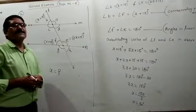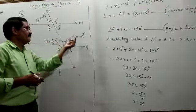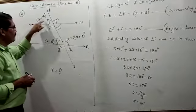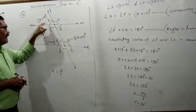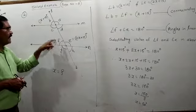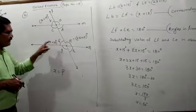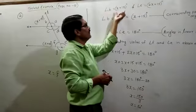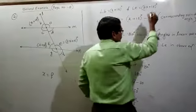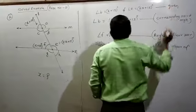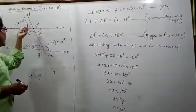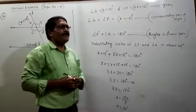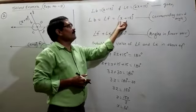You have to equate x plus 15 plus 2x plus 15 with 180 degrees, and find the value of x. First, find angle F from angle B. Since B and F are corresponding angles, if angle B equals x plus 15, then angle F also equals x plus 15. So: angle B equals x plus 15 degrees, angle E equals 2x plus 15 degrees. Angle B equals angle F because they are corresponding angles, and corresponding angles are congruent. Therefore, angle F equals x plus 15 degrees.